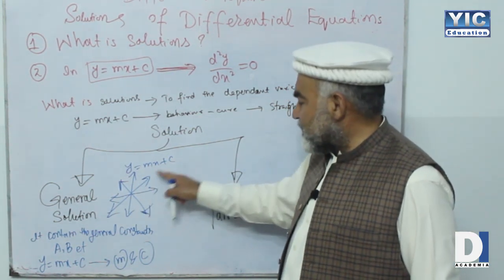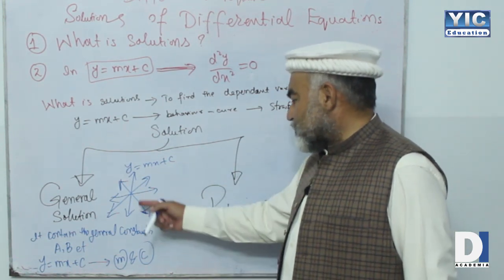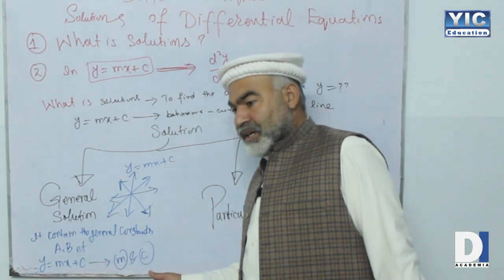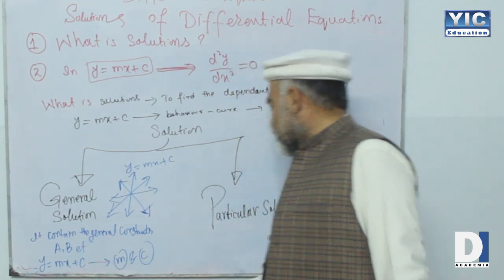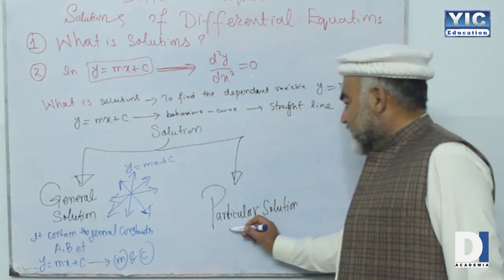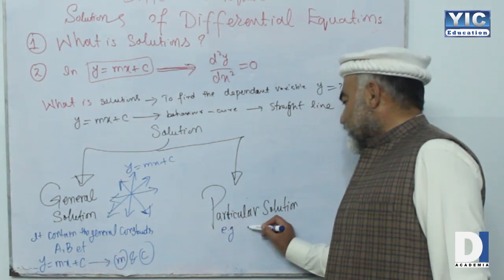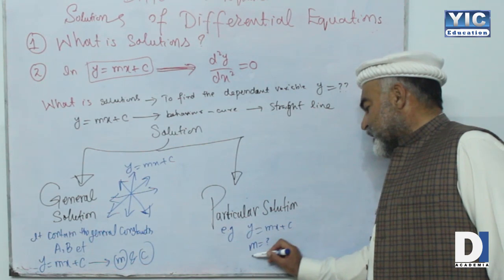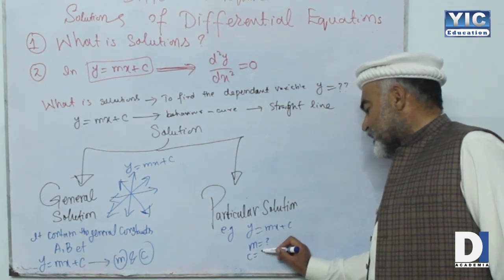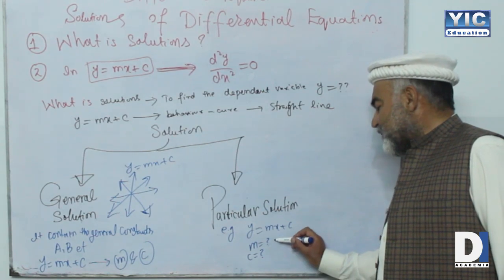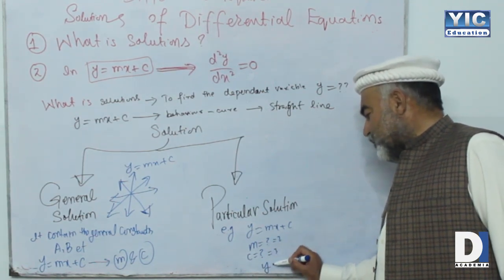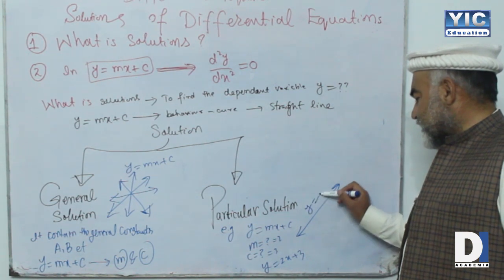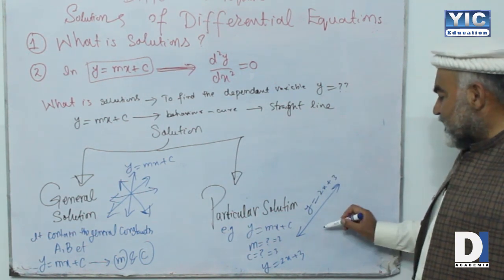For different values of m and different c, you will get different straight lines. So the general solution gives you a family of curves — it will not give you one particular curve. For the particular solution, if m is given, say m = 2, and c is also given, say c = 3, then you will get only one particular straight line: y = 2x + 3.